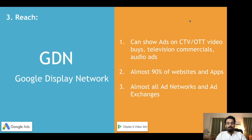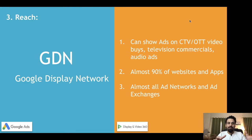The third difference is reach. In Google Ads, display campaigns are only shown on the GDN — the Google Display Network. GDN refers to all the publishers and websites, small or large, that have signed up with AdSense, Google's monetization product. When you create a display campaign in Google Ads, your ads can only appear on websites that have partnered with Google through this network.